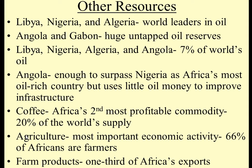Coffee is Africa's second most profitable commodity — a commodity meaning an item used to export to make money. 20% of the world's coffee supply comes from Africa. Agriculture: a lot of folks do subsistence farming, which is just enough to make food for their families. 66% are farmers, and one-third of Africa's exports are farm products.